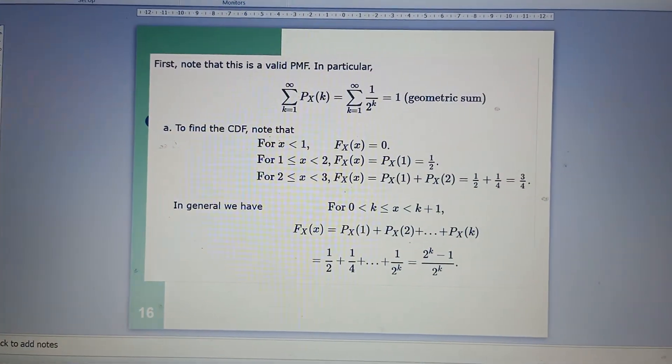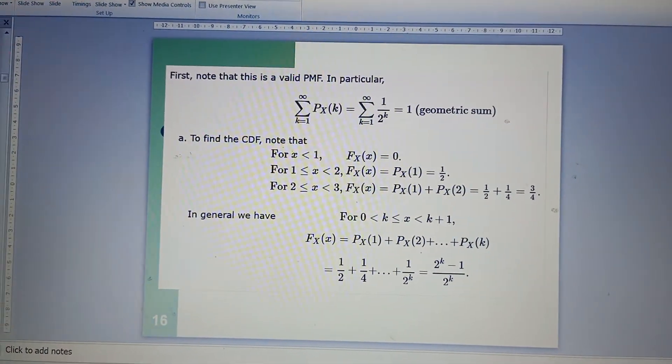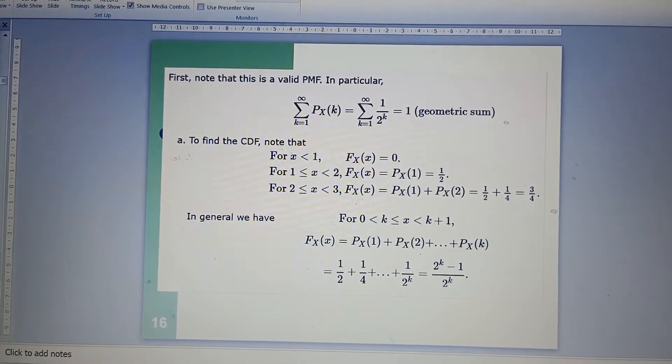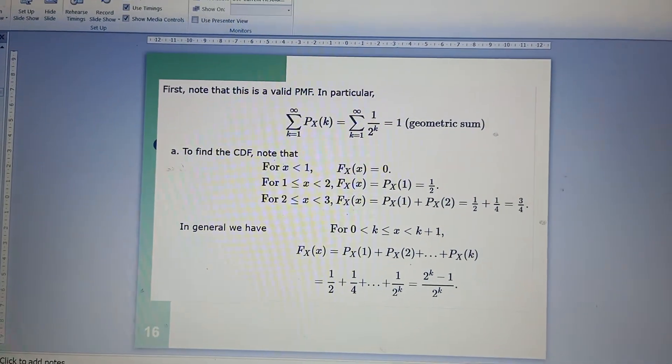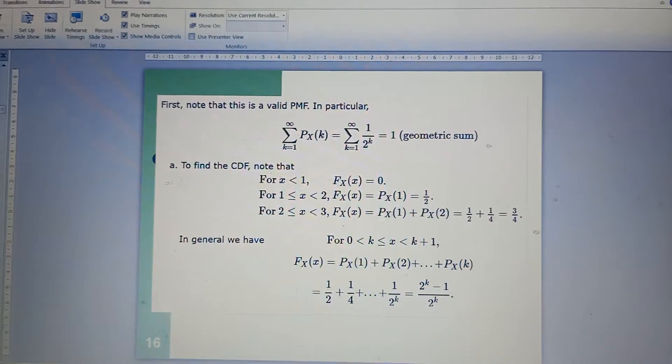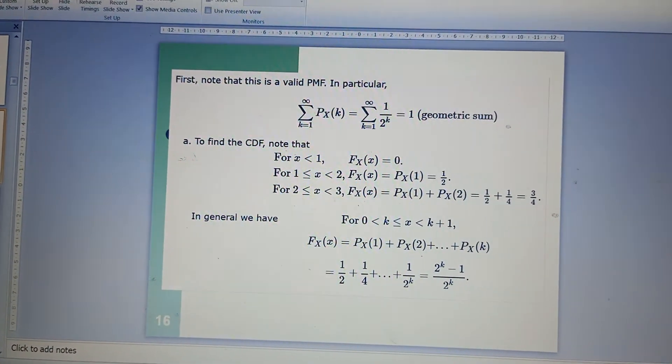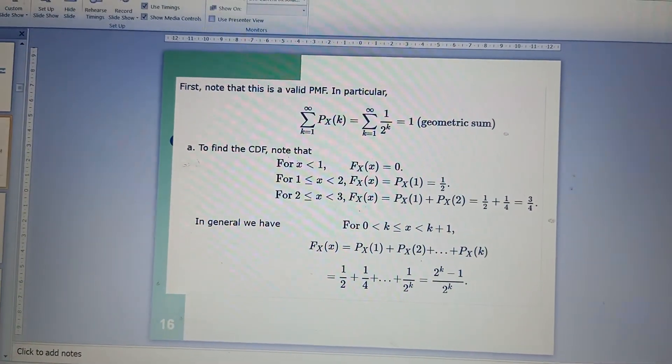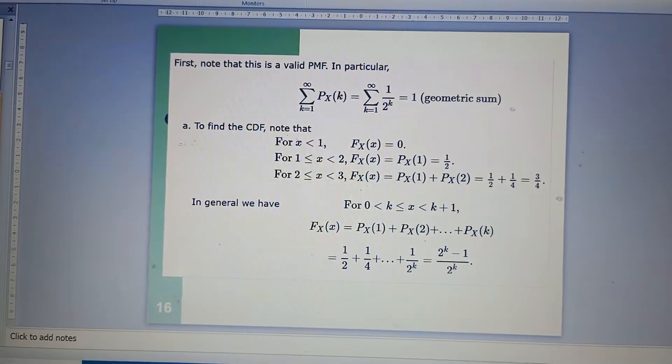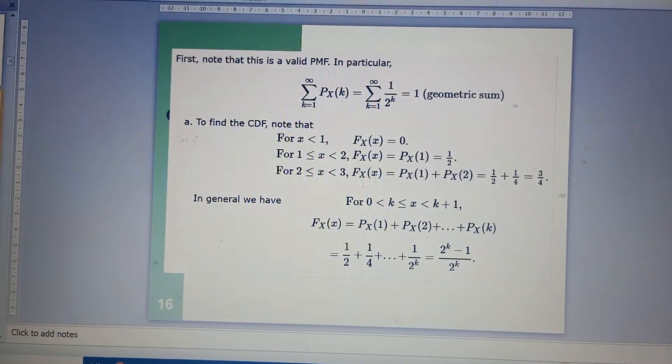If we take in general the above expression, we have F_X(x) equals P_X(1) plus P_X(2) plus... plus P_X(k). P_X(0) will not come because in the range, 0 is not given in the question. So P_X(1) plus P_X(2) plus... plus P_X(k) gives you 1 over 2 plus 1 over 4 plus... plus 1 over 2^k.